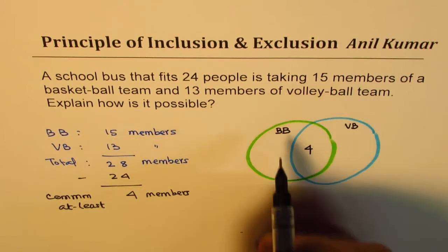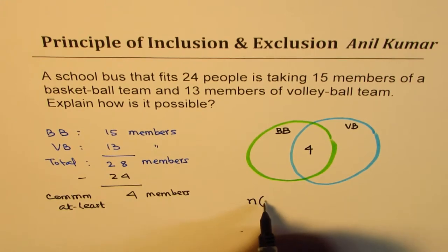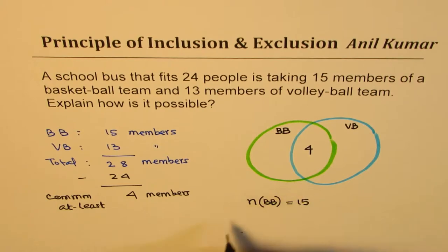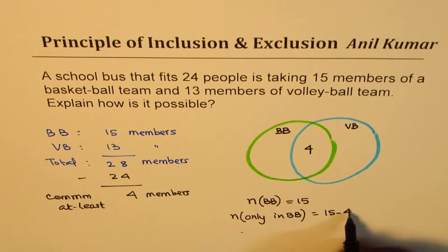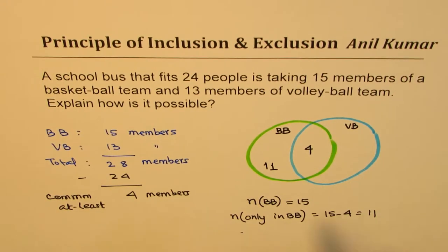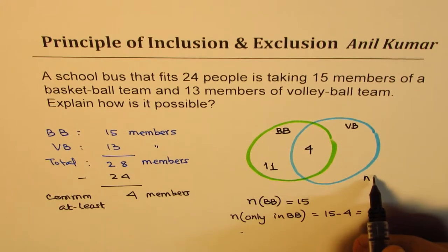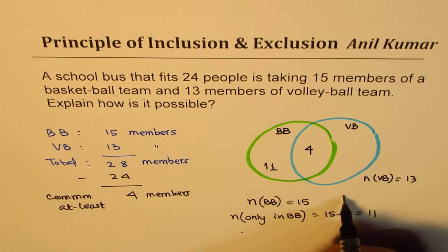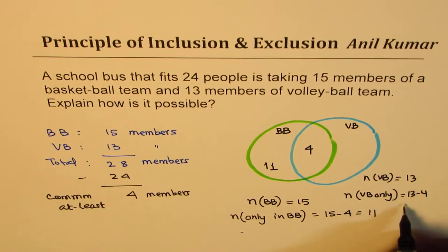We know that there are 15 members for the basketball team. In our nomenclature, we say the number of players in the basketball team equals 15. Now if four are common, the number of members only in the basketball team will be 15 minus 4, that is 11. Similarly, the number of members in the volleyball team is given as 13. Since four are common, the number of members who only play volleyball will be 13 minus 4, and that gives us 9.